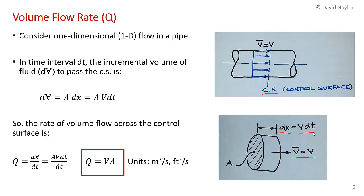So the volume of this cylinder of fluid is just the cross-sectional area times the extruded distance dx, which is V dt. I should point out that I'm using the symbol V with a line through it for volume, just to distinguish clearly volume from velocity. So the volume flow rate across that control surface is the rate of change of volume per unit time. Substituting in for the differential volume, you get Q equals A V dt over dt. The dt's cancel, and we end up with Q equals V times A. This is the equation we're going to be using for one-dimensional flows. It has units of cubic meters per second in the metric system, or cubic feet per second in the British system.